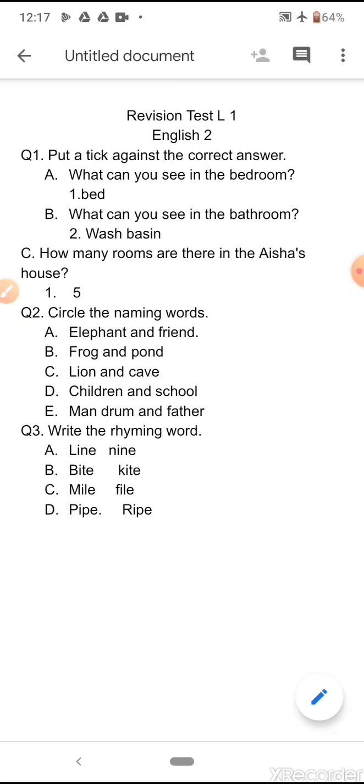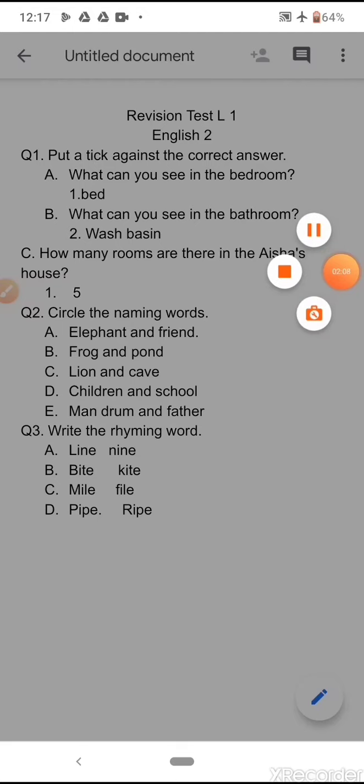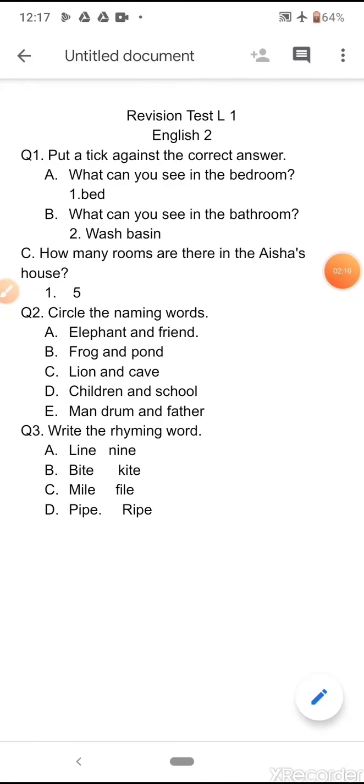The answer for the first sentence is elephant and friend. You are supposed to circle elephant and friend. The next answer is frog and pond. Next one is lion and cave. The next is children and school, and the last one is man, drum, and father.